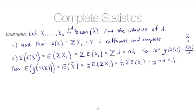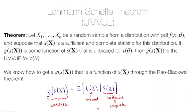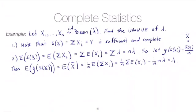Going back to our theorem: if S(X) is sufficient and complete, then the unique function of S(X) that gives an unbiased estimator is the unique minimum variance unbiased estimator. We've found what we needed — a function of the sufficient and complete statistic that's unbiased. That means G(S(X)) equals X̄ is the uniformly minimum variance unbiased estimator of lambda.